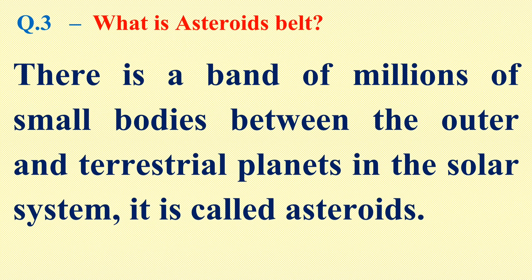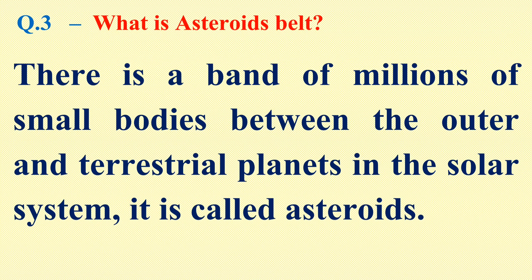Question number 3: What is an asteroid belt? There is a band of millions of small bodies between the outer and the terrestrial planets in the solar system, it is called asteroids. This belt is located between Mars and Jupiter and is called the asteroid belt.